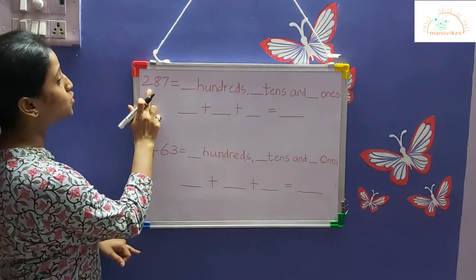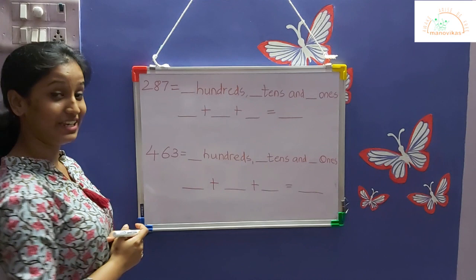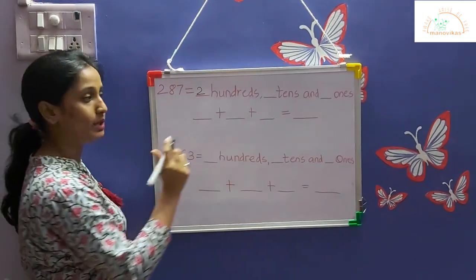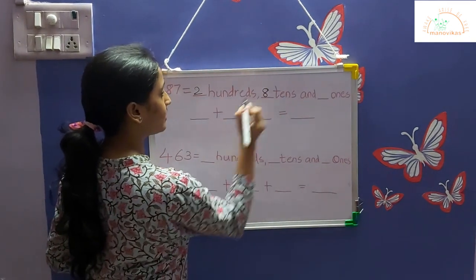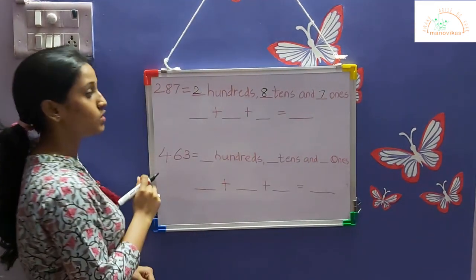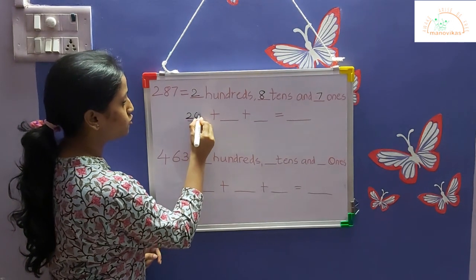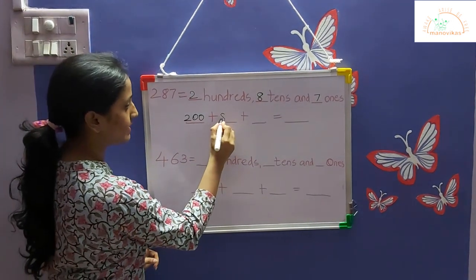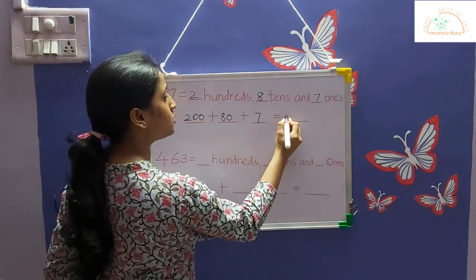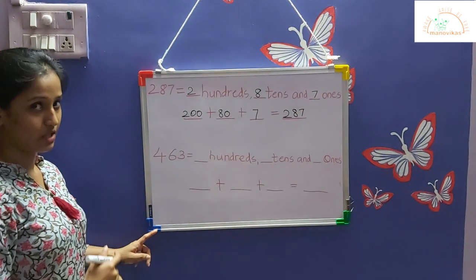Now let us try to solve this. We have the number two hundred and eighty-seven. Tell me which will be hundreds — yes, correct. Two will be hundreds, eight will be tens, and seven will be ones. So we write it as 200 plus 80 plus 7, which is equal to two hundred and eighty-seven.